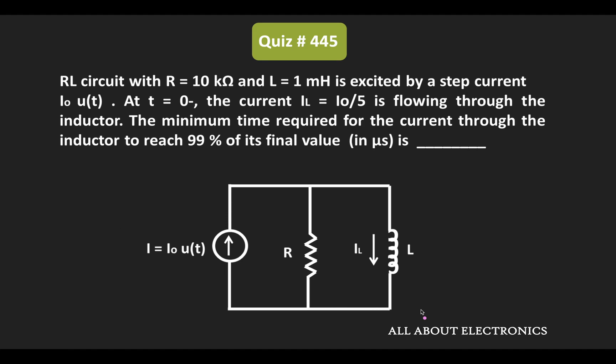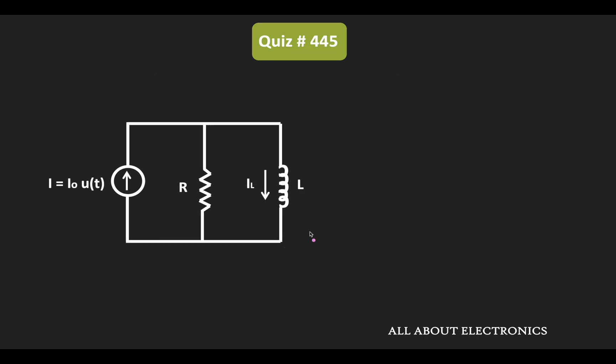Here we have been given that at t equal to 0 minus, this inductor current IL is equal to I0 divided by 5.